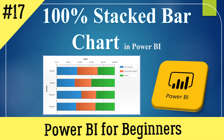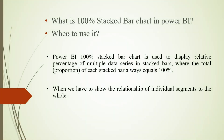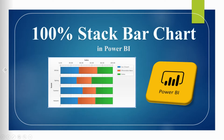Hello everyone, welcome back on my channel. Today we will see the 100% stacked bar chart in Power BI — what it is and when we have to use it. The 100% stacked bar chart is used to display the relative percentage of multiple data series in stacked bars, where the total proportion of each stacked bar always equals 100%. We can see here in this chart that all levels total 100%, and three categories divide proportionally within that.